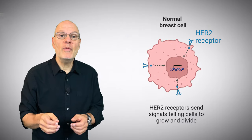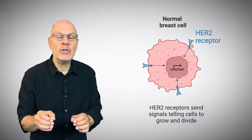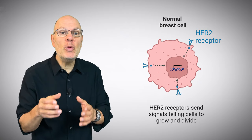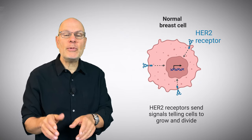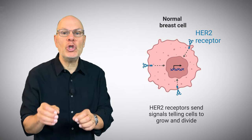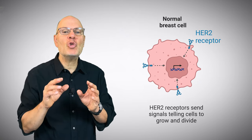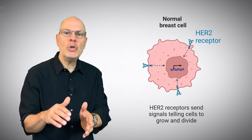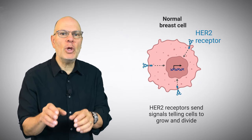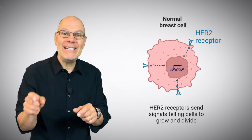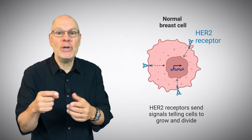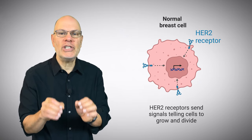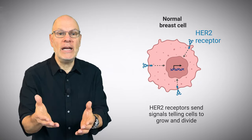Oncogenes can also involve the overexpression of receptors. Overexpression means that the cell produces too much of a gene product. One such receptor is HER2, which is overexpressed in about 25% of all breast cancers. HER2 stands for human epidermal growth factor receptor 2, and it's a receptor for a growth factor, a chemical signal that signals a cell to divide.